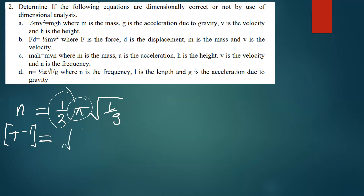Inside the square root, l has dimension L. Gravity g is meters per second squared, giving dimension LT⁻². So we have the square root of L divided by LT⁻², which simplifies. We need to check whether this equals T⁻¹ on the left side.